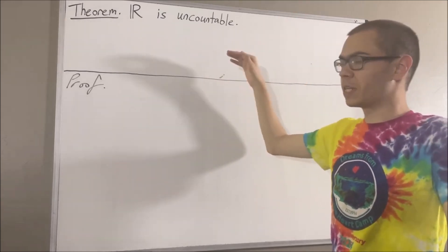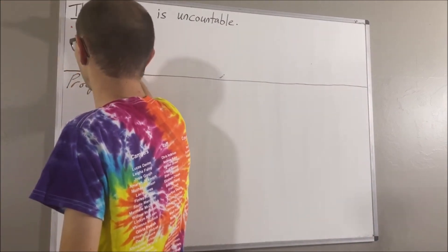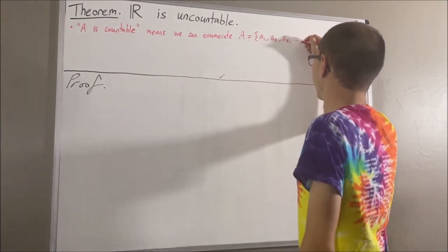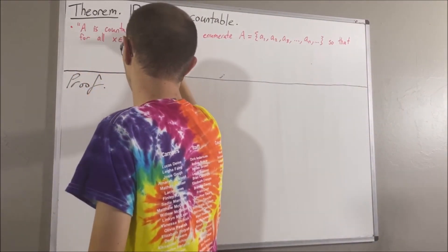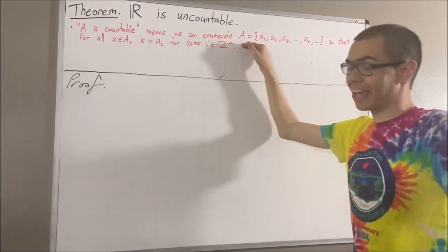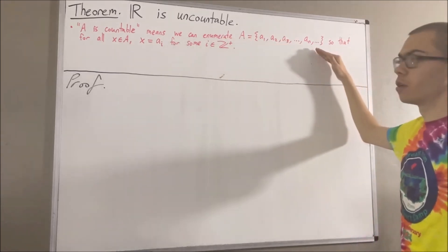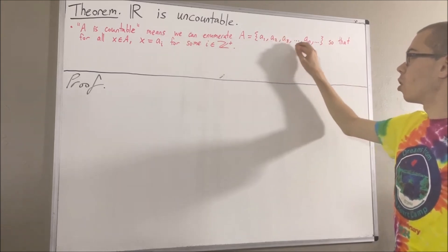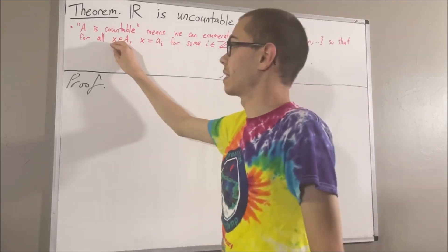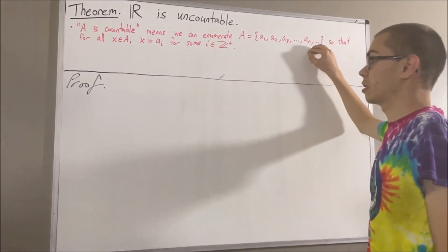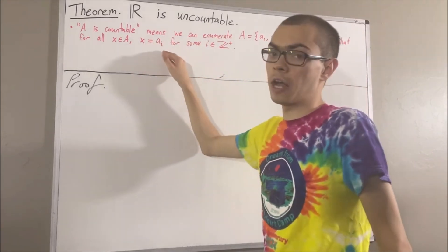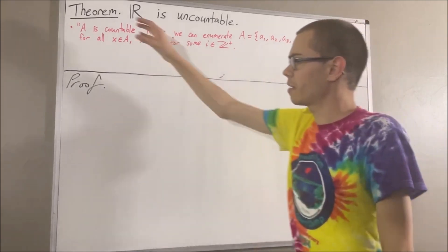Let's first remind ourselves what it means for a set to be countable. Given a set A, to say that A is countable means that we can enumerate the elements of A over the positive integers. So we've listed out all of the elements of A, and this list goes on forever. Given any element x in A, x must belong to this list — x must be equal to A_i for some positive integer i. And so that is what this means.